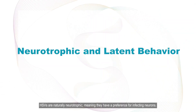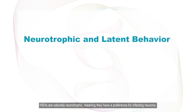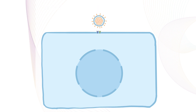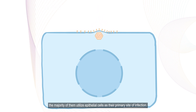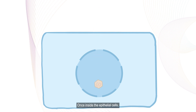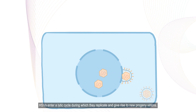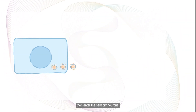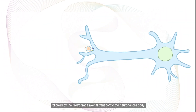HSVs are naturally neurotrophic, meaning they have a preference for infecting neurons. While some HSVs can directly infect neuronal cells, the majority of them utilise epithelial cells as their primary site of infection. Once inside the epithelial cells, HSVs enter a lytic cycle during which they replicate and give rise to new progeny virions. Virions released from the primary site of infection then enter the sensory neurons, followed by their retrograde axonal transport to the neuronal cell body, where they can establish a lifelong latent infection.